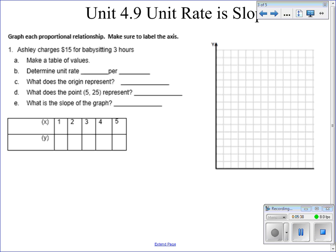We also are going to tie in our independent and dependent variables that we talked about earlier in the week. When we know that we're going to pay $15 for three hours, if we write that out using our independent and dependent variables, we're going to say that the amount of money that Ashley makes is going to depend on the amount of hours that she works.